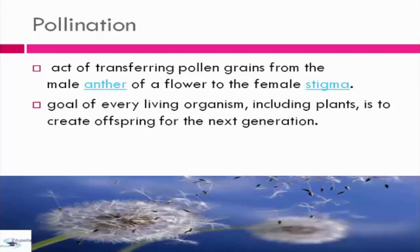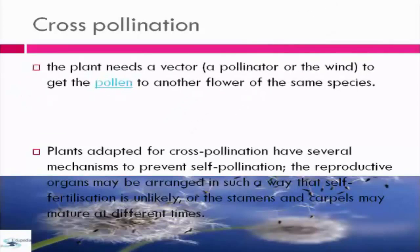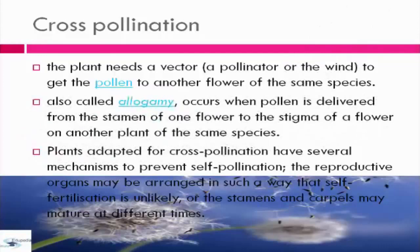For cross-pollination, the plant needs a vector, a pollinator, or the wind to get the pollen to another flower of the same species. It is also called allogamy and occurs when pollen is delivered from the stamen of one flower to the stigma of a flower on another plant of the same species. Plants adapted for cross-pollination have several mechanisms to prevent self-pollination.